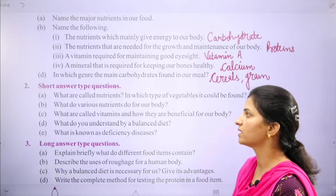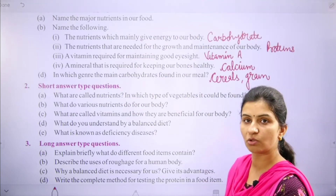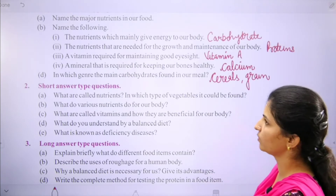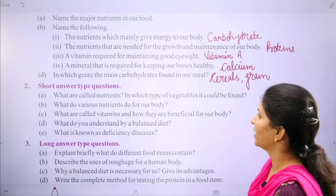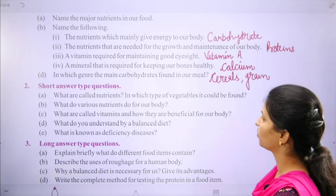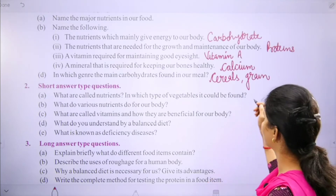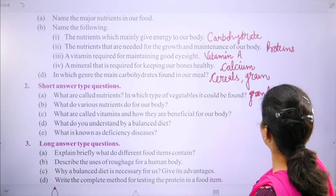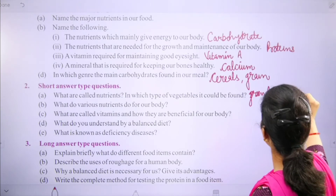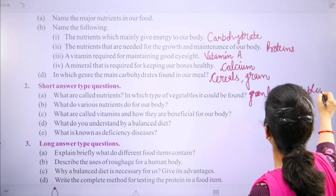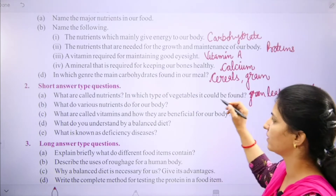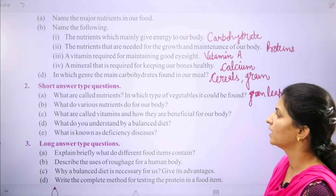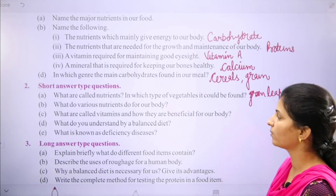Nutrients are the substances from our food from which we get energy, growth, and maintenance. Nutrients are found in our food. They can be found in vegetables — in green leafy vegetables and all types of vegetables.